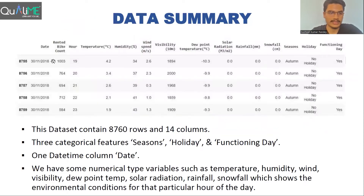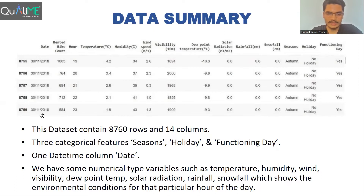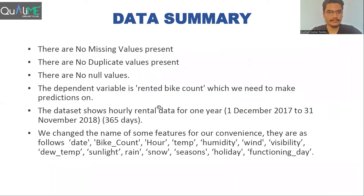This is how the dataset looks like. These are the feature names: date, rented bike count (the target variable), temperature, humidity, wind speed, visibility, dew point temperature, solar radiation, rainfall, snowfall, season, holiday, and functioning day. The dataset contains 8,760 rows and 14 columns. There are some categorical features, and there are no missing values and no duplicate values. Rented bike count is the target variable.